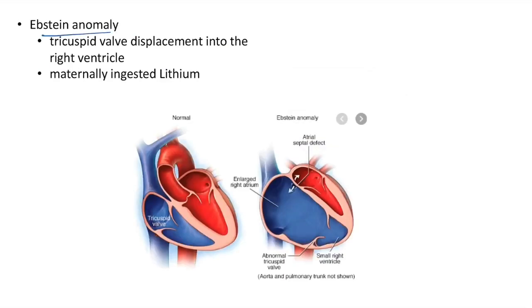Ebstein anomaly is tricuspid valve displacement into the right ventricle. It occurs due to maternally ingested lithium. There is an abnormal tricuspid valve into the right ventricle, resulting in a small functional right ventricle.